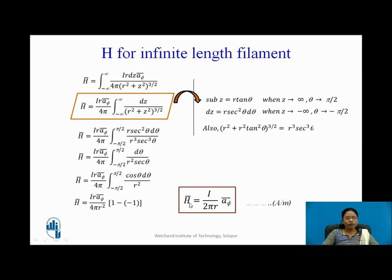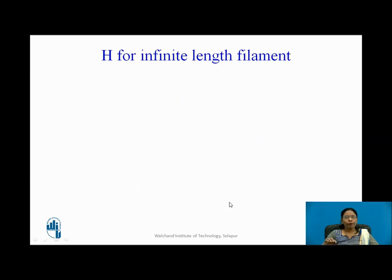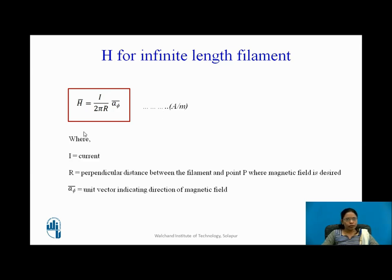H bar equals I divided by 2 pi R A phi bar, in amperes per meter. This is the equation for H bar for an infinite length filament. Here, I is the current flowing through the filament, R is the perpendicular distance between the filament and the point P where we desire the magnetic field (a scalar quantity), and A phi bar is the unit vector indicating the direction of the magnetic field.